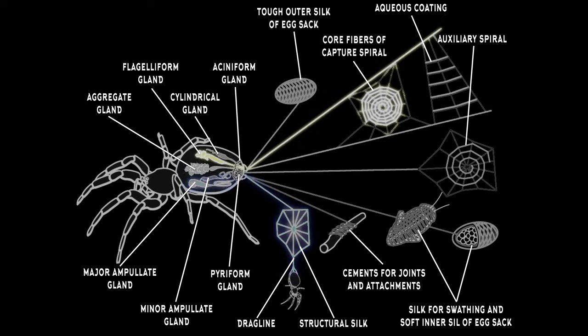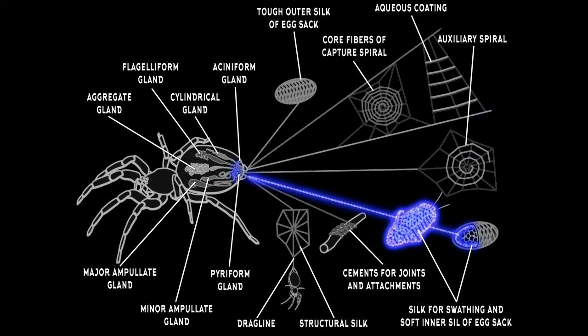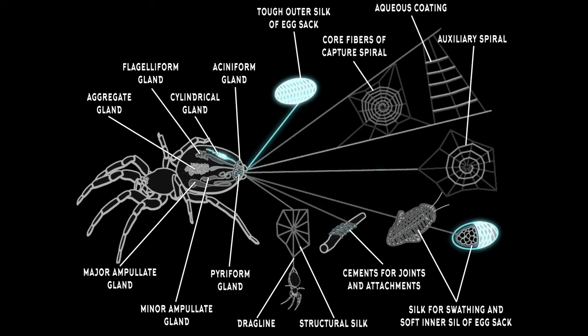The other glands are the flagelliforms, for the catching spiral on the web. The minor ampullates, to reinforce the draglines and catching spiral. Aciniforms, for wrapping prey and lining egg sacs, tubuliform, for the outer coating of an egg sac, aggregates, the sticky aqueous coating of the webs, and pyriform, for joining silk lines to surfaces.